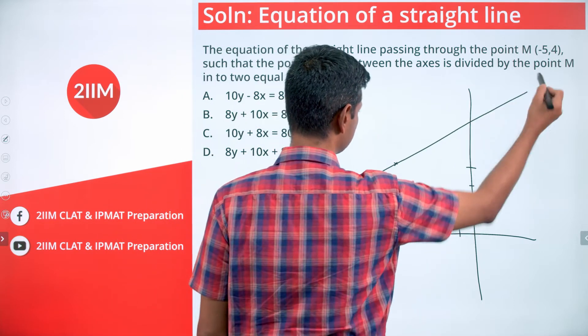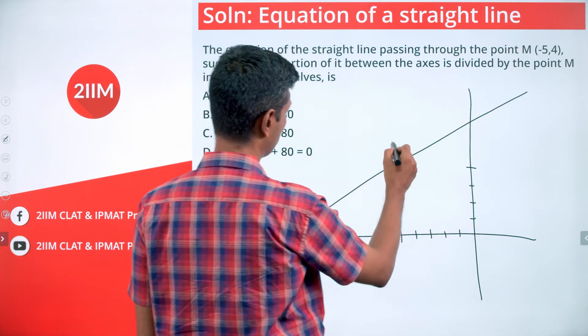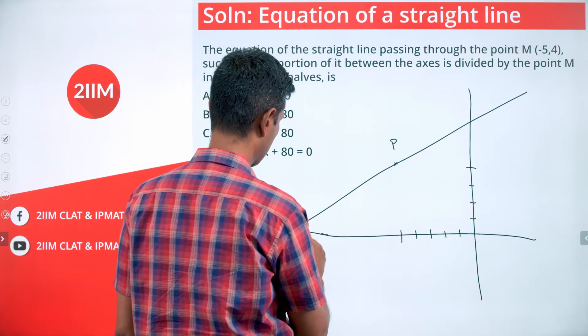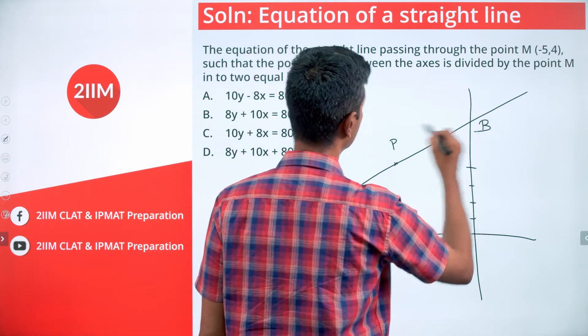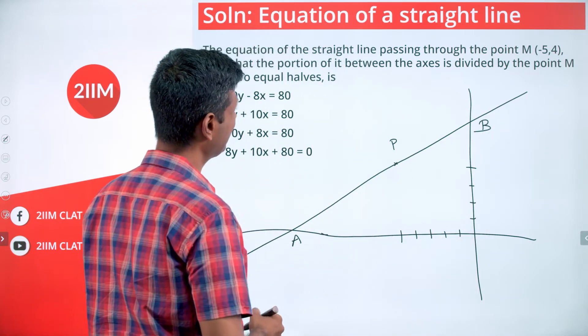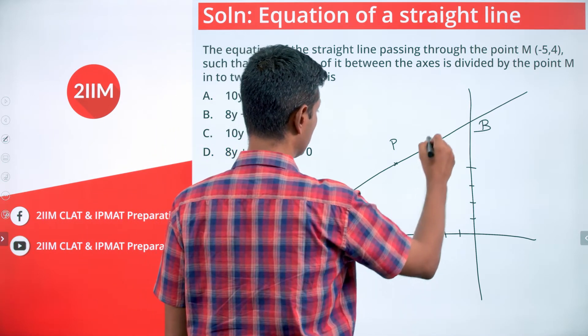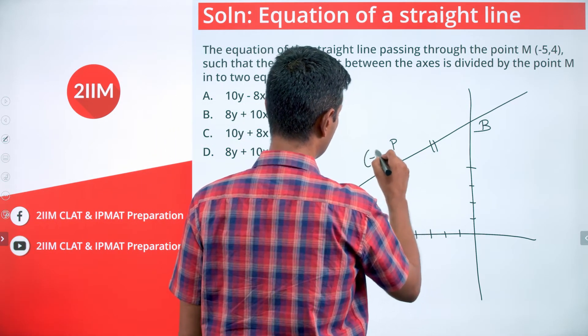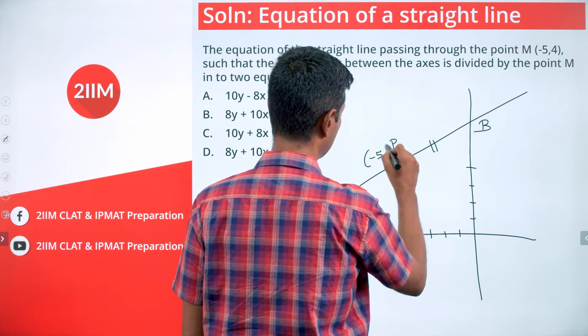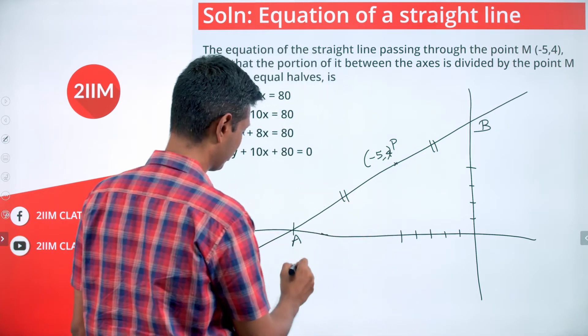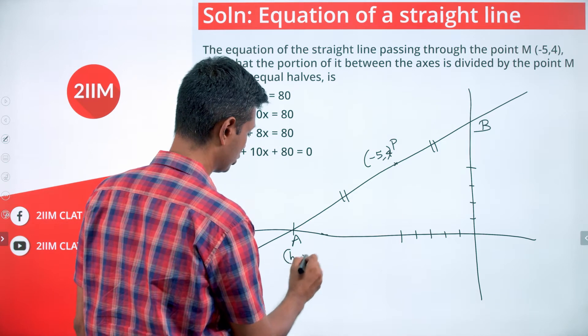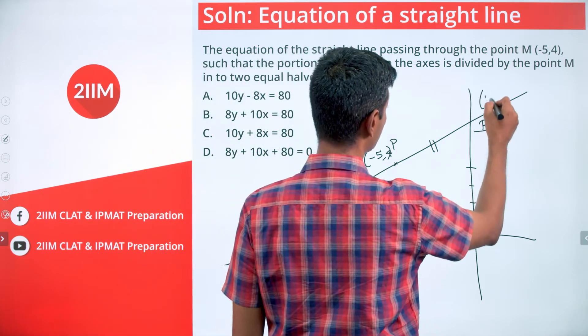This second line tells us that the line really like this. And so we call this point as P. This is A, this is B. They told the portion between the axes is divided by the point M into two equal halves. This is equal to this.